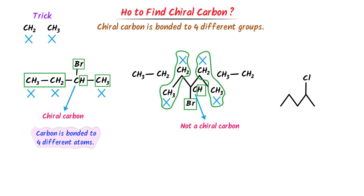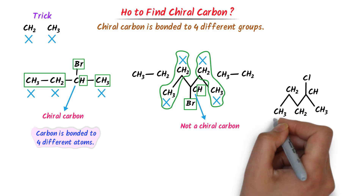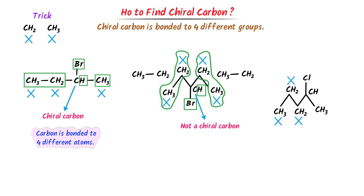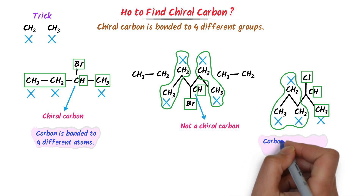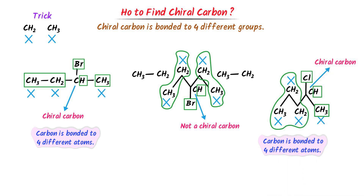In the third case, I write CH3, CH2, CH2, CH and CH3. According to the trick, this CH3 is not a chiral carbon — I cross it. I cross this CH2, this CH2 and CH3 because these carbons are not chiral carbons. Now in case of this carbon, we can see that it is bonded to chlorine and to hydrogen. At the left hand side, this carbon is bonded to CH3, CH2 and CH2. At the right hand side, this carbon is bonded to methyl CH3. This carbon is bonded to four different groups. Hence, it is a chiral carbon. Thus, using this method, we can easily find chiral carbon.